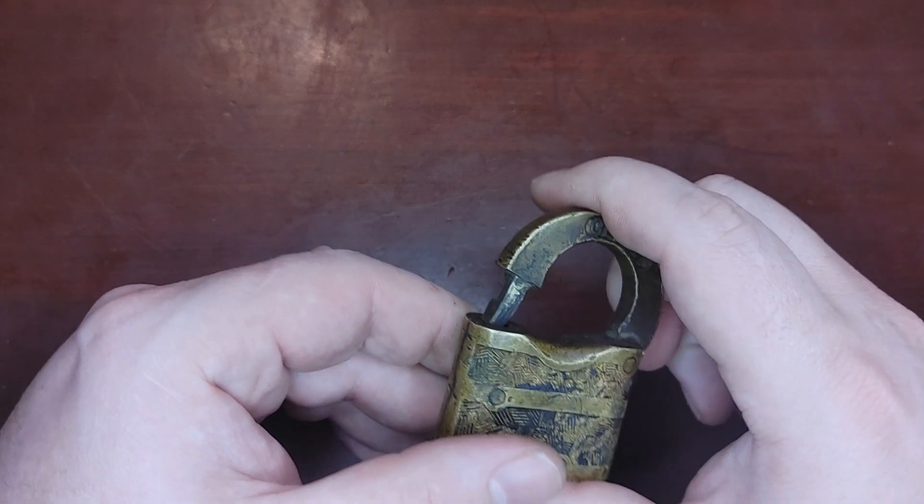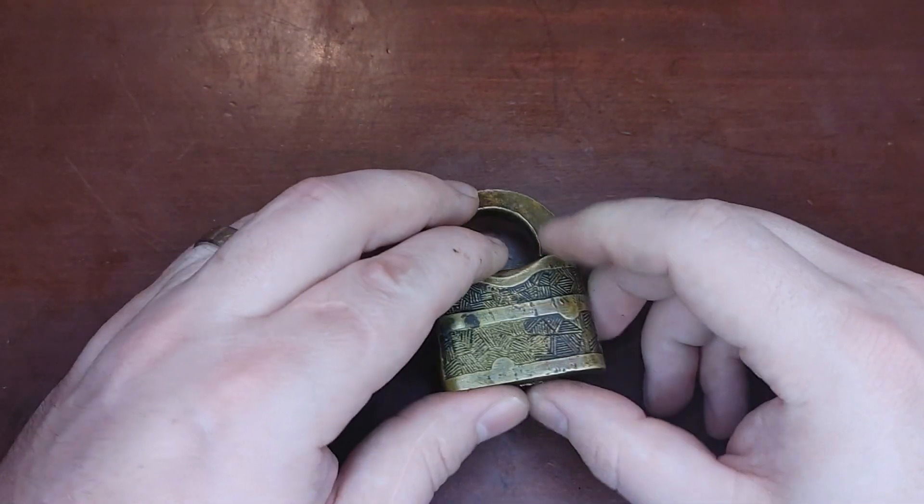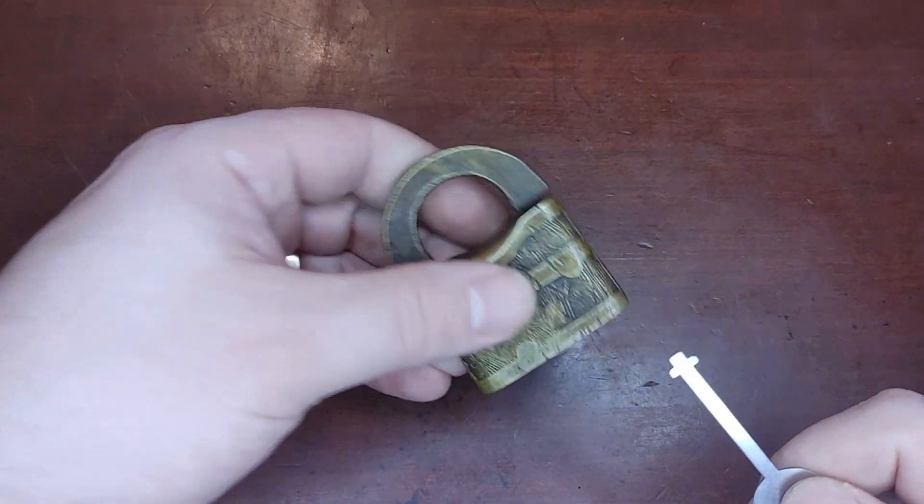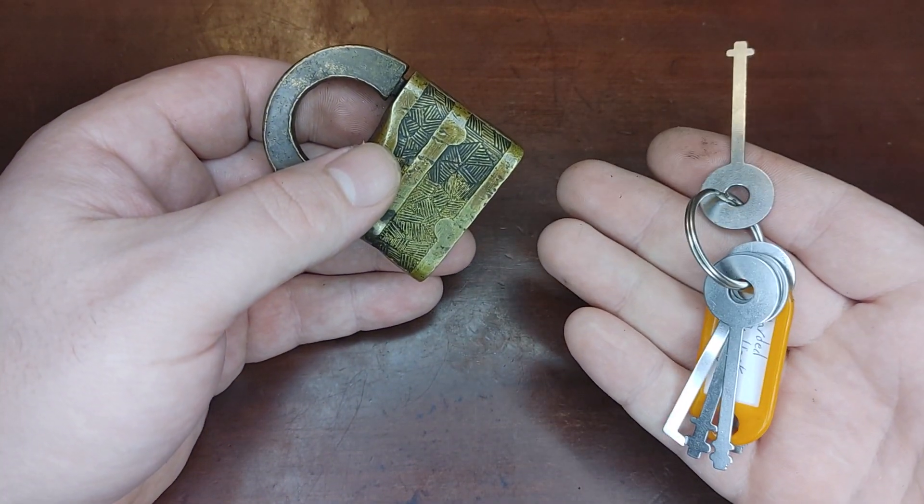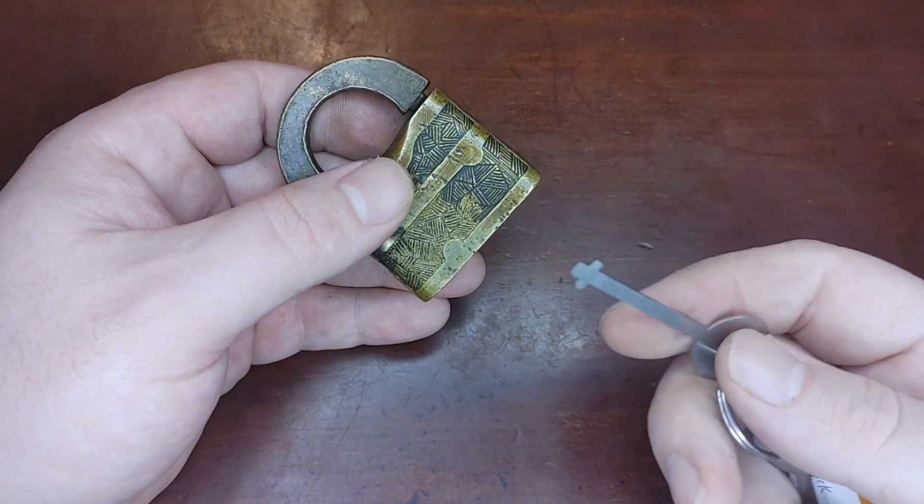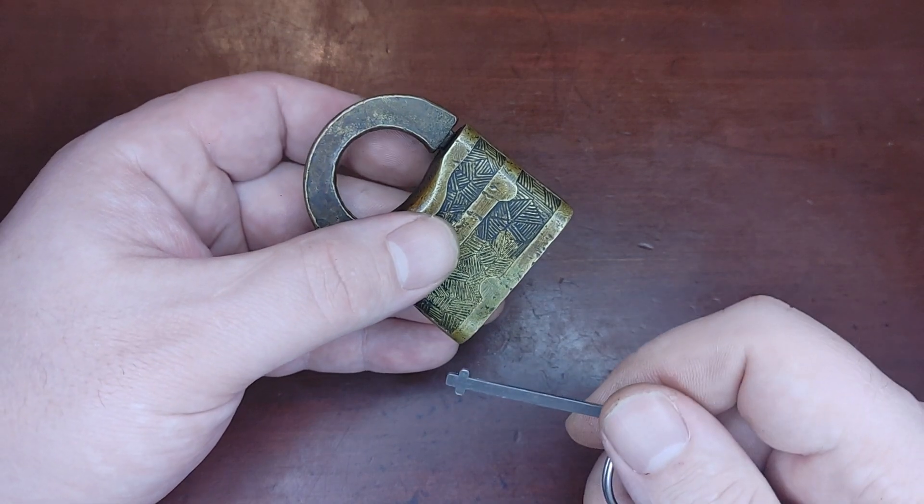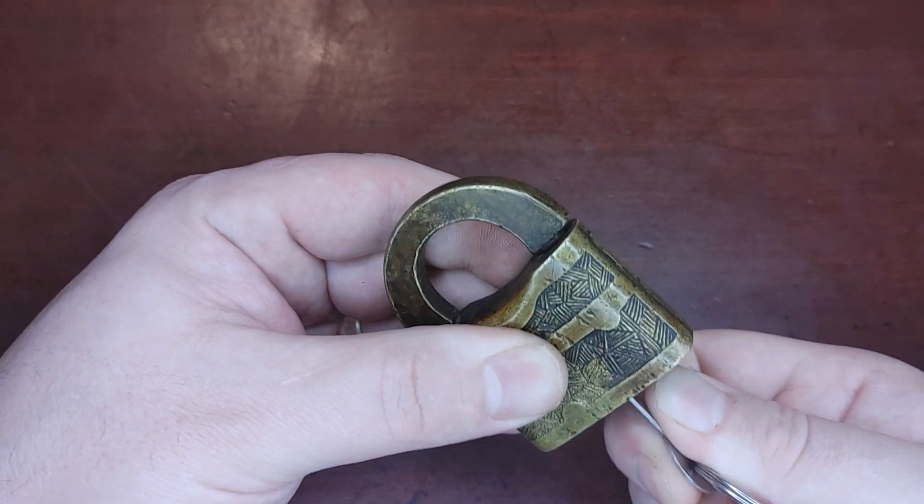To close it, we can just close the shackle there. This is a warded lock. This design is still in use today. Master still makes it, some other brands make it. The easiest way to open these is with a set of warded tryout keys, but they sell warded picks like this.